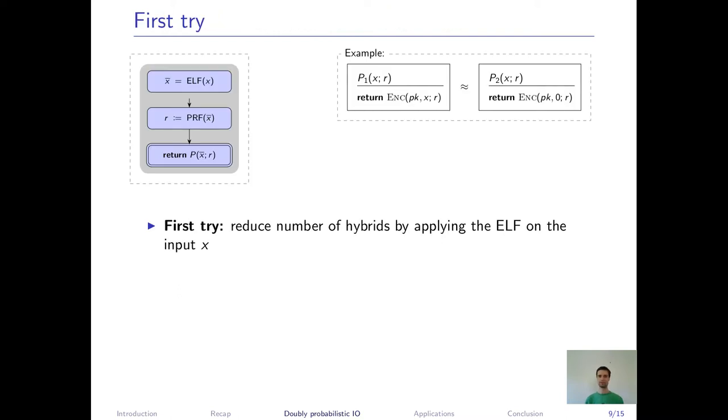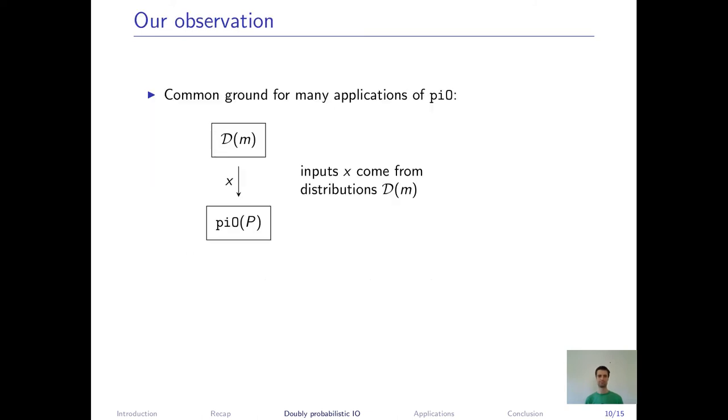Okay, how could we use ELFs to reduce the number of hybrids in the Canetti et al. construction? A first try could be, we apply the ELF directly on the input X, such that the number of hybrids becomes polynomial if the ELF is in lossy mode. Okay, why doesn't this work? The problem is that if we pre-process the inputs to the circuit or to the program with some arbitrary hard-to-invert function and then evaluate the program on the result, this will not preserve the function, the expected function of this program. So this approach cannot work.